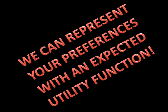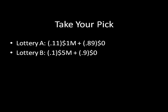Why should you prefer A and C, or B and D? Let's take a closer look at these lotteries. Lottery B is $5 million with 10% probability and $0 with 90% probability. We can decompose that $0 with 90% into $0 with 1% probability and $0 with 89% probability. Now we see that 89% of the time you're getting $0 in both lotteries, so whatever determines your preference between A and B is your preference between winning $1 million with 11% probability versus winning $5 million with 10% and $0 with 1%.